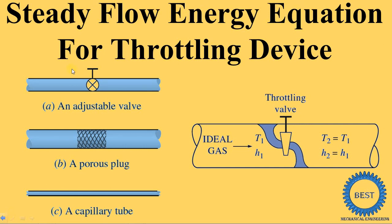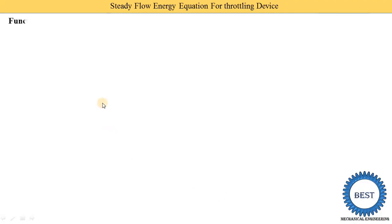In this video, we derive steady flow energy equations for the throttling device — that is the three types of throttling device. First one is the expansion valve, a porous plug, and a capillary tube. First we understand what the functions of the throttling device are and what is the throttling process, then after we derive the steady flow energy equations for the throttling device.